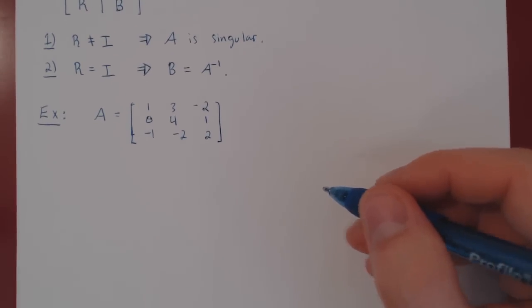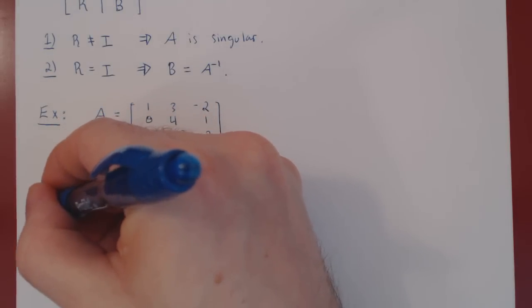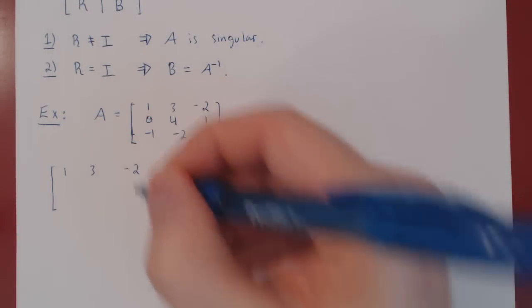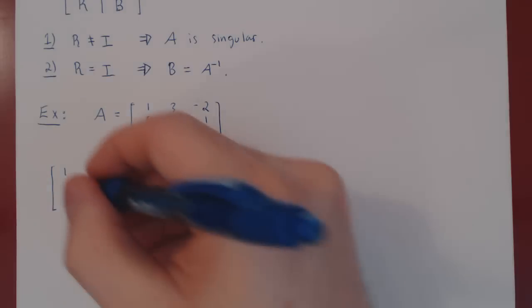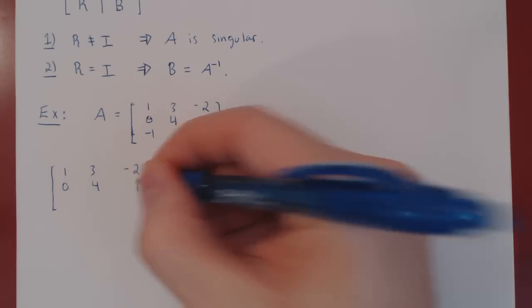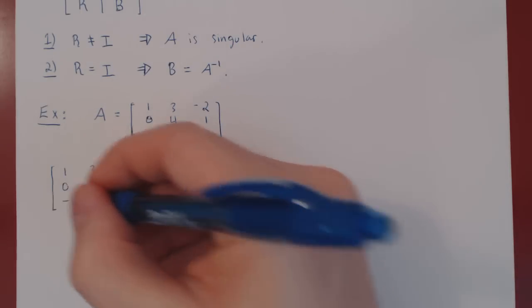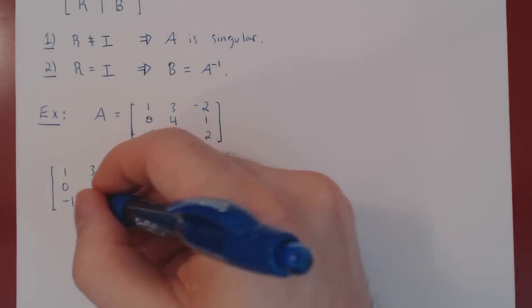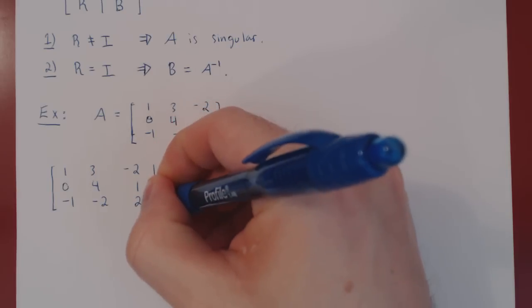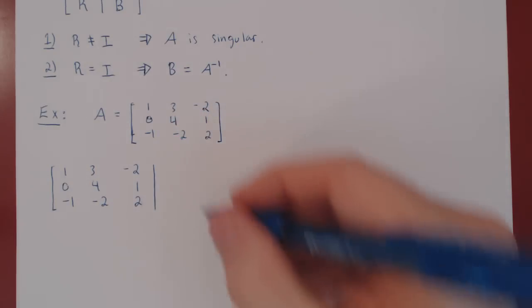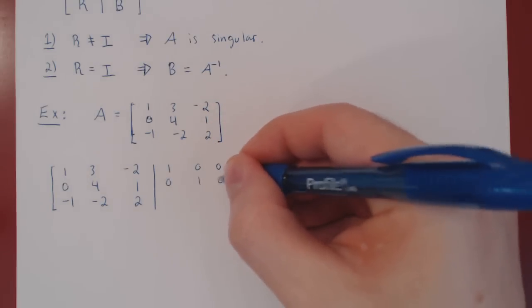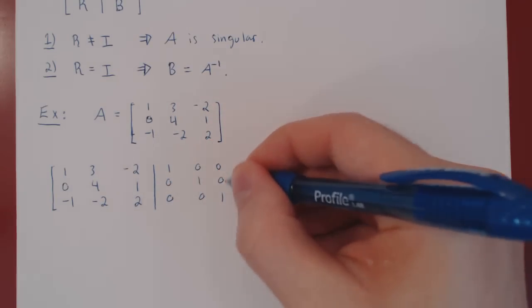The first step is to augment A with I — the identity matrix of the same size, so I will be 3 by 3. We augment A with I, placing the identity [1,0,0; 0,1,0; 0,0,1] alongside A.